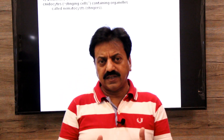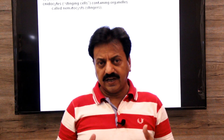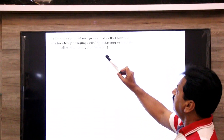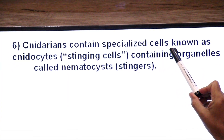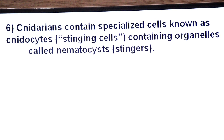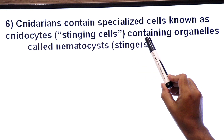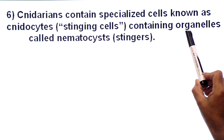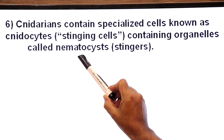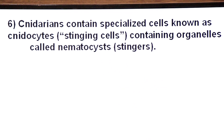This phylum is named Cnidaria due to the stinging cells called cnidocytes. Now we will study the structure of cnidocytes in detail — how they are specialized to sting prey or predators. Cnidarians contain specialized cells known as cnidocytes, used to sting prey and predators. Inside cnidocytes there are organelles called nematocysts, which are the stingers. These nematocysts contain a coiled thread and barbs.